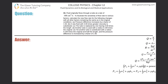Number 34. Fluid originally flows through a tube at a rate of 100 cubic centimeters per second. To illustrate the sensitivity of flow to various factors, calculate the new flow rate for the following changes, with all other factors remaining the same as in the original conditions. So for letter A, it says the pressure difference increases by a factor of 1.5.